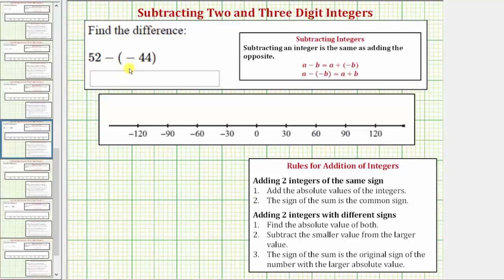We can write this difference as a sum because subtracting an integer is the same as adding the opposite. So because subtracting negative b is the same as adding positive b,